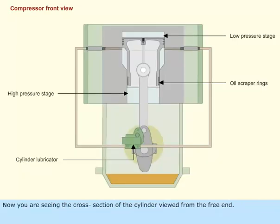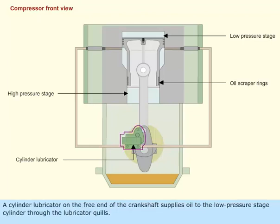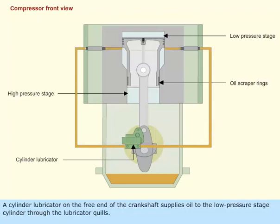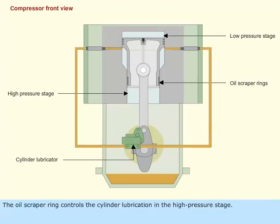Now you are seeing the cross section of the cylinder viewed from the free end. A cylinder lubricator on the free end of the crankshaft supplies oil to the low pressure stage cylinder through the lubricator quills. The oil scraper ring controls the cylinder lubrication in the high pressure stage.